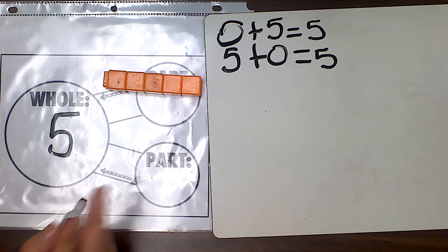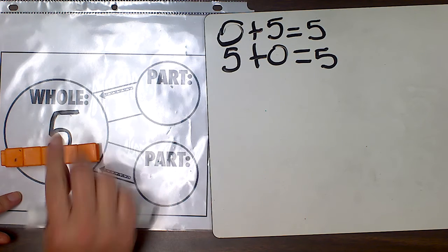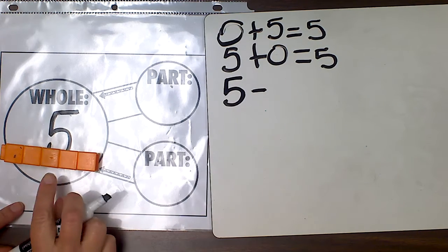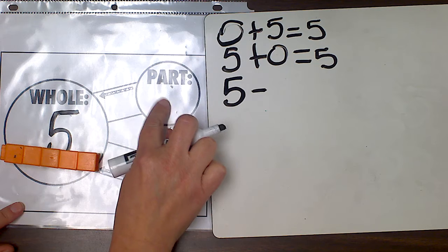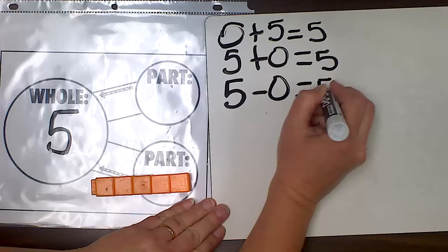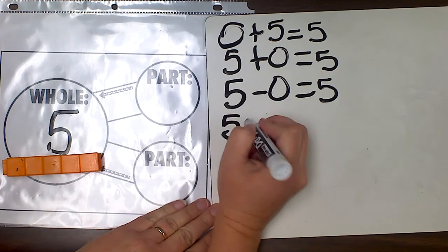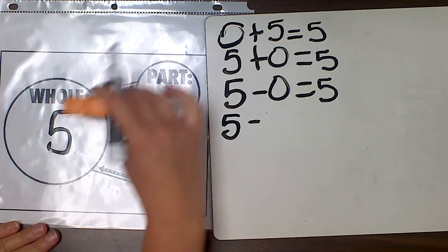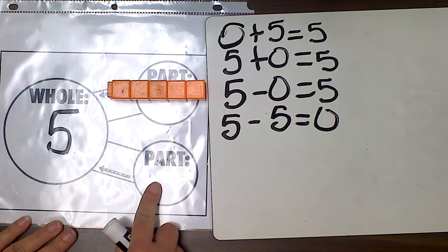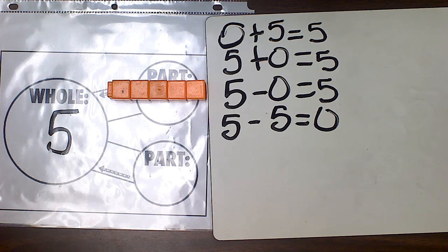I could also write two subtraction sentences. When I subtract, I start with my whole number, which is five. If I have five and I take away nothing, I'm left with a part of five. I could also start with five as my whole number and take all five away, and I am left with a part of zero.